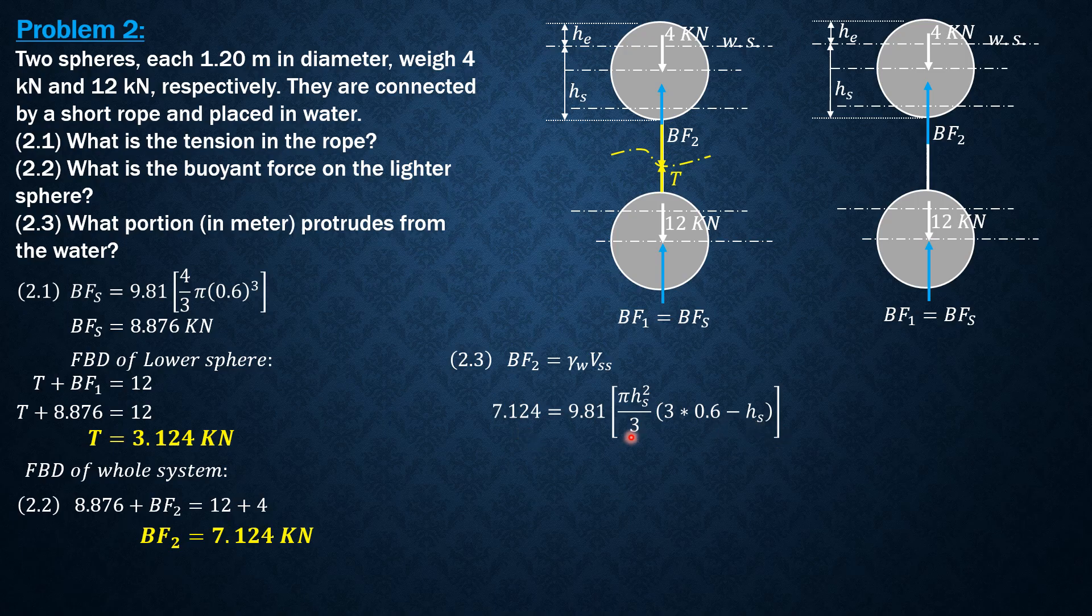7.124 × 3 divided by 9.81π, that would be 0.69347, then hs × 3 × 0.6 is 1.8 hs² - hs³. Rearranging: hs³ - 1.8 hs² + 0.69347 = 0.